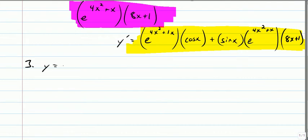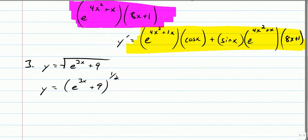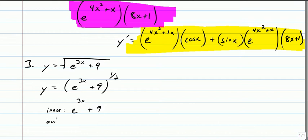This is a fun one. y equals the square root of e to the 3x plus 9. I'm going to rewrite it as that quantity to the one-half, so I can see the power rule — the one-half comes out front. That's the chain rule; I've got an inner and an outer. The inner is e to the 3x plus 9, and the outer is x to the one-half.